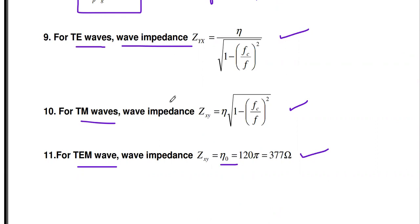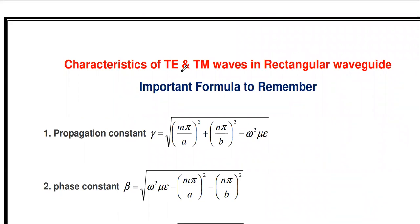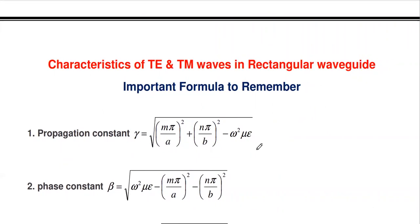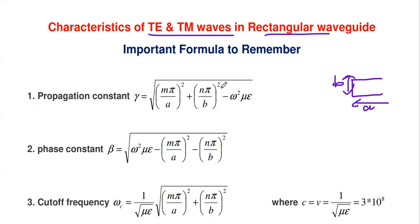Now we discuss formulas for TE and TM wave characteristics in a rectangular waveguide. In a rectangular waveguide, two dimensions are given: width a and height b, compared to parallel planes where only the separation a is given. These formulas are also common for both TE and TM waves.